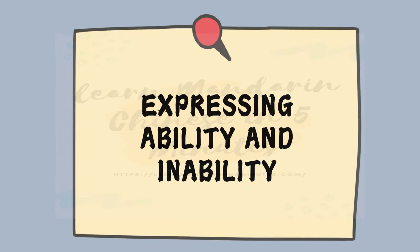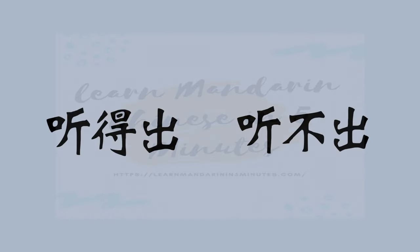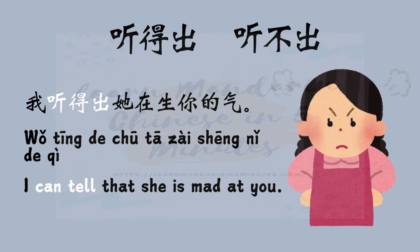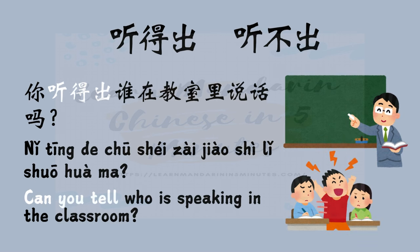Now let's talk about expressing whether you can or cannot distinguish sounds. That's where 听得出 and 听不出 come in. 听得出 means 'to be able to tell by listening.' For example, 我听得出她在生你的气 — I can tell that she is mad at you. This means that just by listening to her voice or tone, you can tell that she is angry. Another example: 你听得出谁在教室里说话吗 — Can you tell who is speaking in the classroom? The speaker is asking if the listener can identify the person speaking based on their voice.